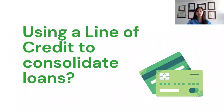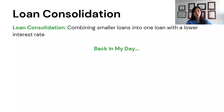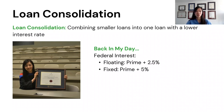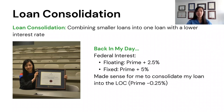A common question students ask is: should I consolidate my loans into a line of credit? Loan consolidation means combining all smaller loans into one loan with ideally less interest. Back when I graduated, the federal student loan interest was prime plus 2.5% floating, or prime plus 5% fixed — much higher. So it made sense to consolidate into my line of credit, which was at prime minus 0.25%. I used my LOC to pay off those student loans, with the exception of about $9,000, which I'll explain later.